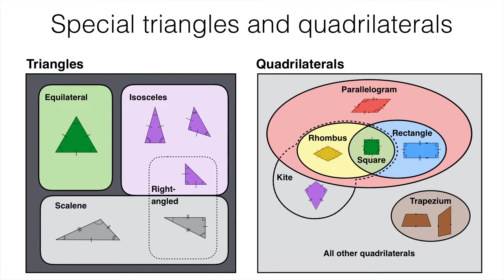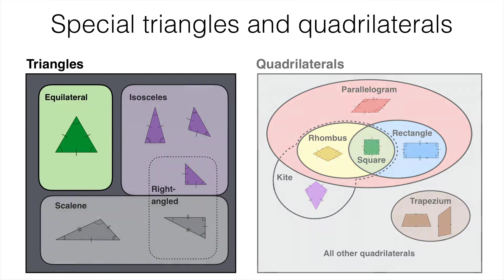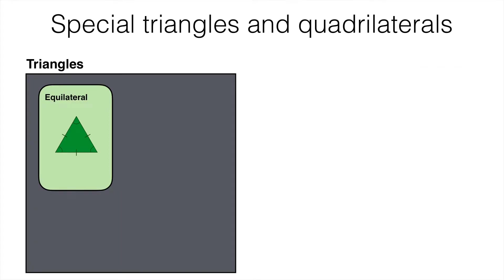In this video we are looking at special triangles and quadrilaterals. Let's start with the equilateral triangle. Equilateral triangles are regular, that means they have three sides or edges of equal length and three angles of equal size.